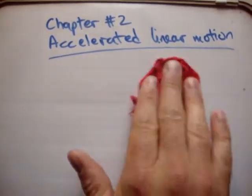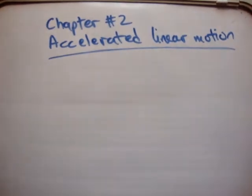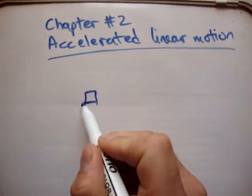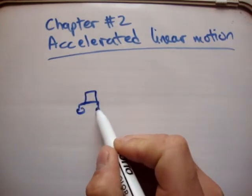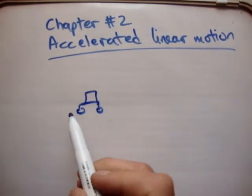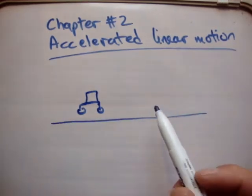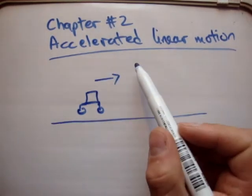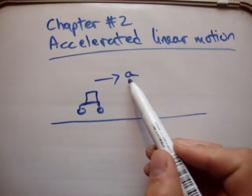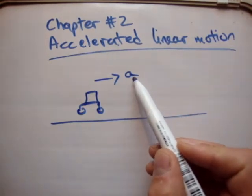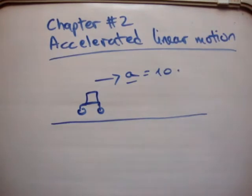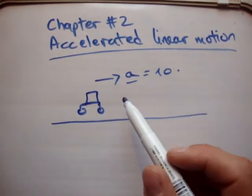Now, what sorts of things can you analyze with accelerated linear motion? You could analyze, let's say this is my car with my terrible drawing. You could analyze the motion of a car along a road. If it is accelerating by a certain acceleration vector, A might be equal to 10, accelerating at 10 meters per second squared.